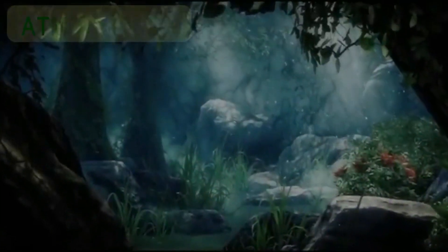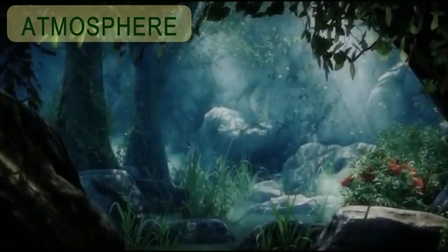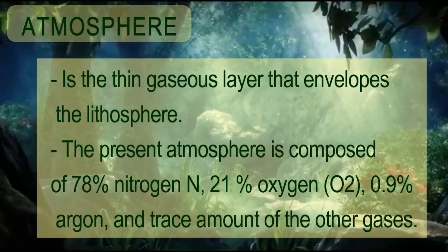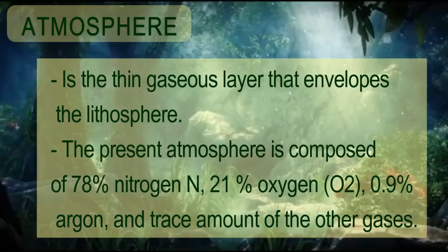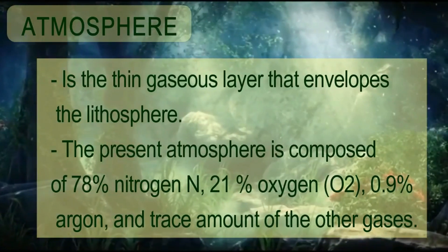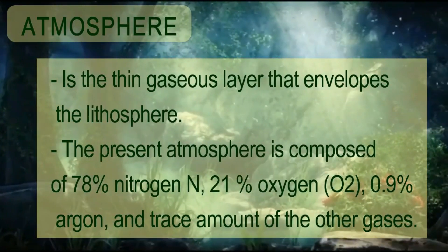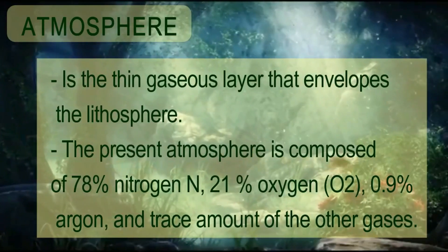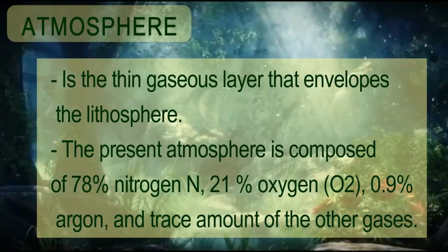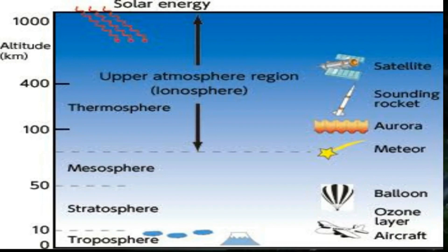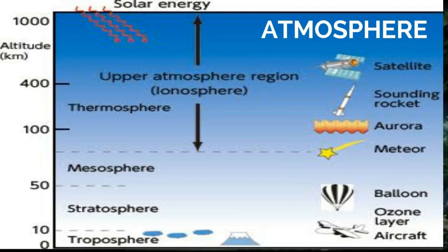The next subsystem is the atmosphere. It is the thin gaseous layer that envelopes the lithosphere. The present atmosphere is composed of 78 percent nitrogen, 21 percent oxygen, 0.9 percent argon, and trace amounts of other gases. The atmosphere also has layers that differ in terms of temperature and distance.